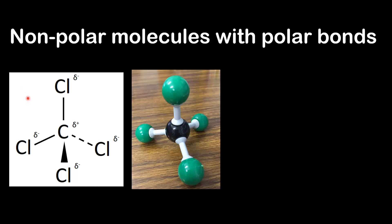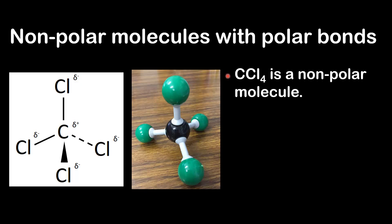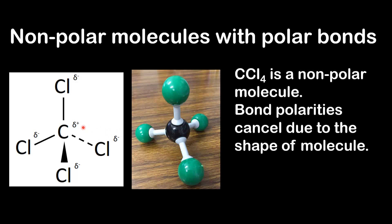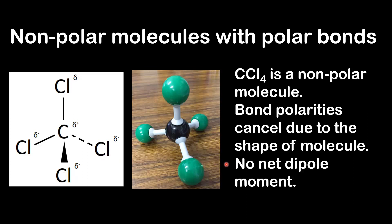Another example of a non-polar molecule with polar bonds is carbon tetrachloride. As you can see, it has four polar bonds. The carbon-to-chlorine bond is polar because of the difference in electronegativity — the chlorine has a negative dipole and the carbon a positive dipole. Even though it contains four polar bonds, carbon tetrachloride is a non-polar molecule because the bond polarities — the positive and negative dipoles — cancel out due to its tetrahedral shape. We can say the molecule has no net dipole moment.